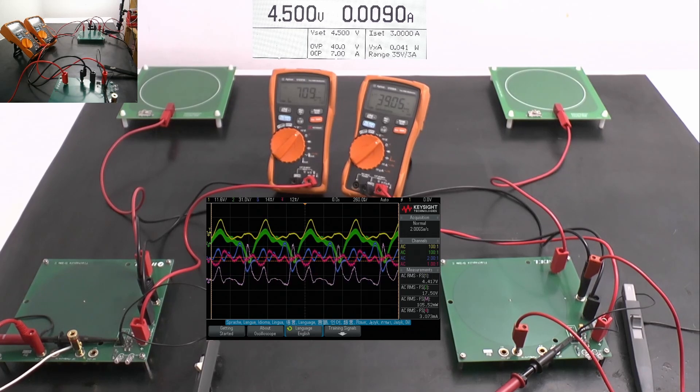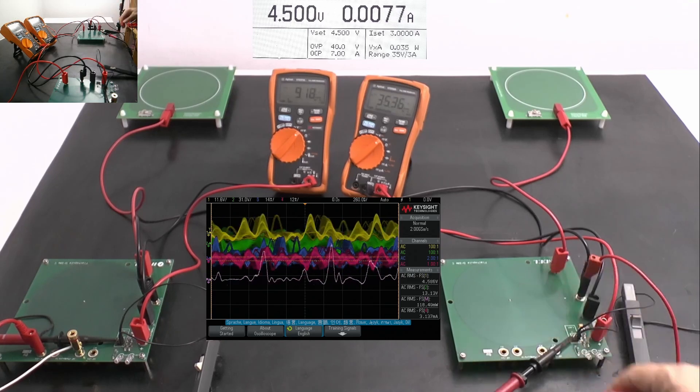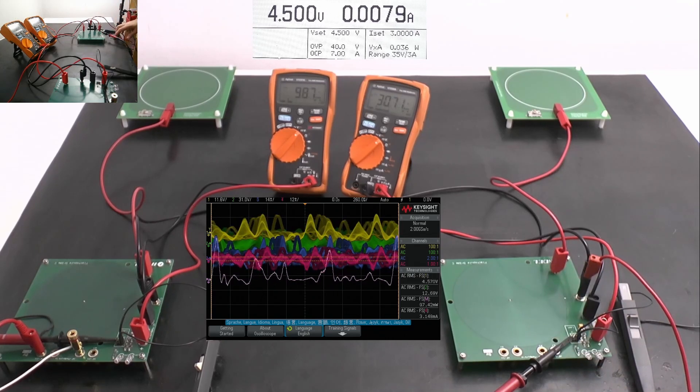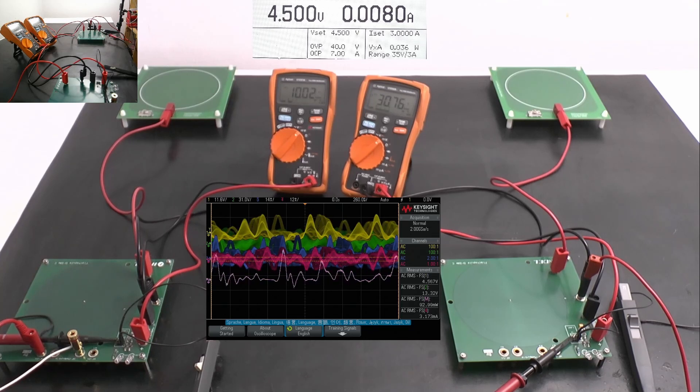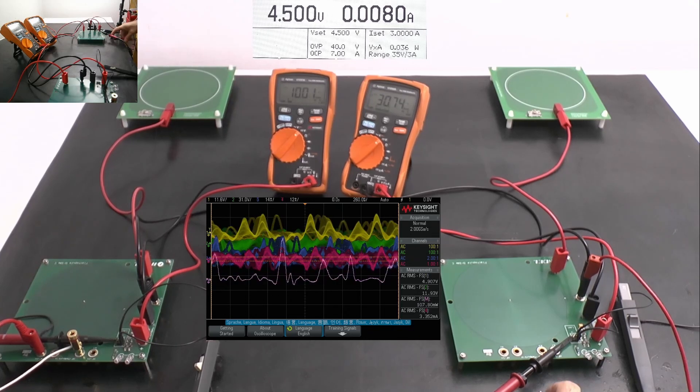If I look at the current, if I look at channel 4 that's purple, it's 3.1 mA. Let's take that out for a sec. And it's 3.2 I would say. It doesn't make a big difference from a value point of view.